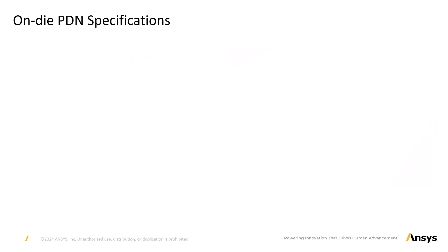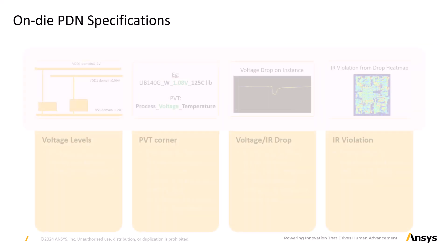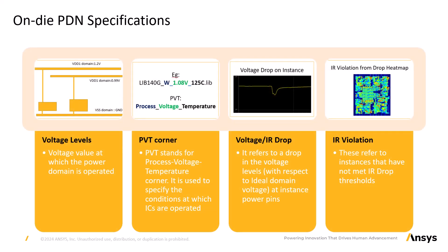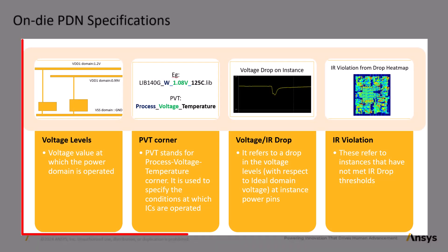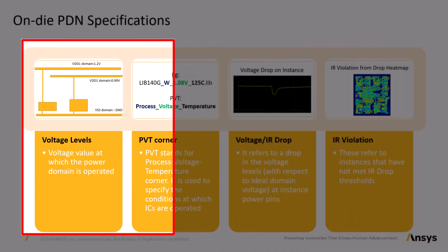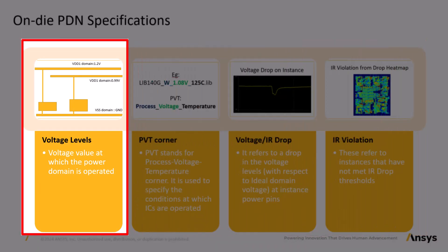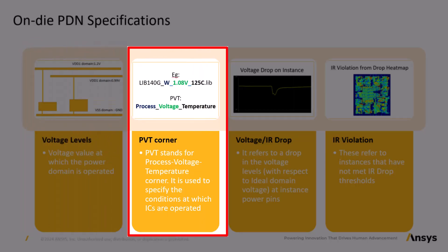On-die PDN specifications. When performing power integrity checks on the on-die PDN network several specifications need to be adhered to. First, domain voltage level: this refers to the voltage levels to which each independent power net is connected. For instance some may operate at 0.9 volt while others at 0.8 volt.